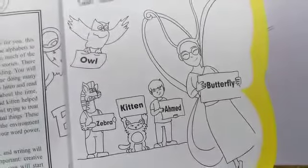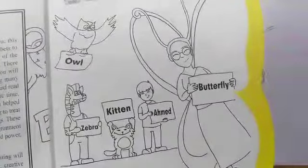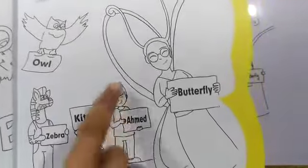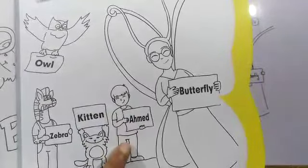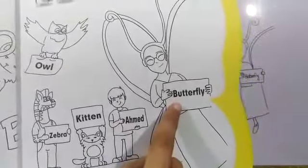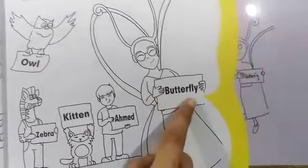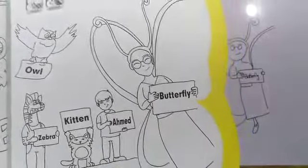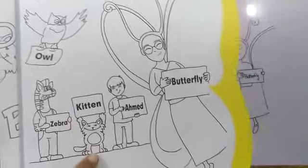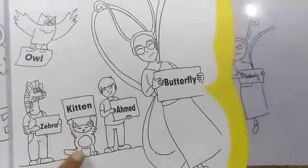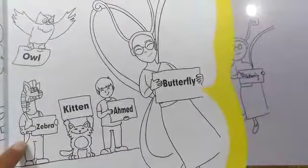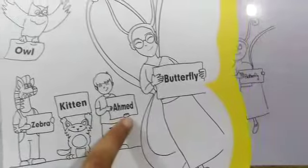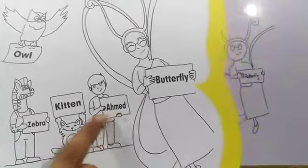Okay children, where is Butterfly? Where is Butterfly on this page? This is Butterfly? No, this is not Butterfly. This is Butterfly? No. This is Butterfly? Yes, very good. What is this? Butterfly. And where is Ahmed? This is Ahmed? No, it's not Ahmed. This is Ahmed? No. This is Ahmed? Yes, very good. What is this? Ahmed.